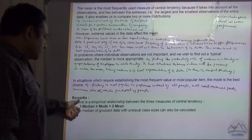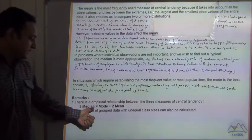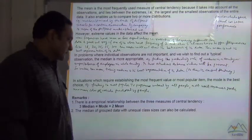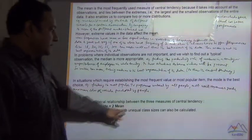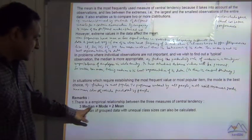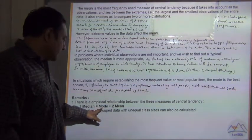And also there is a remark that there is a relationship: 3 times median equals mode plus 2 times mean. This is the relationship between the 3 central tendencies, that is median, mode, and mean.